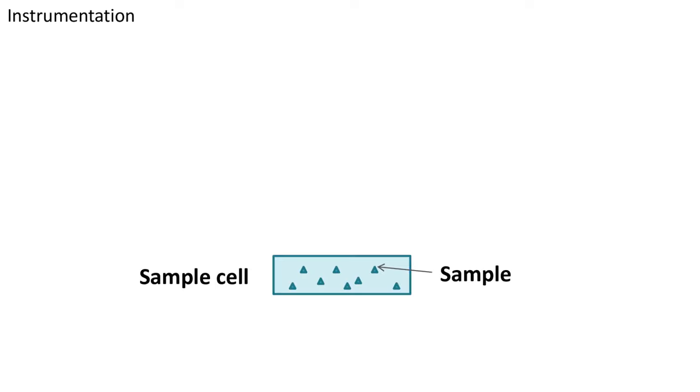Now, let's see the schematic diagram of optical tweezing instrument. We have a sample cell where the sample is held. At the bottom, we have a source of light and a convex lens to focus the light.